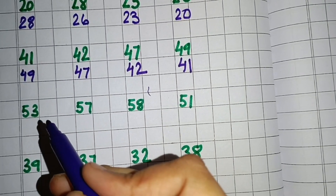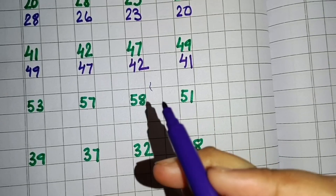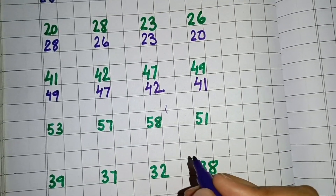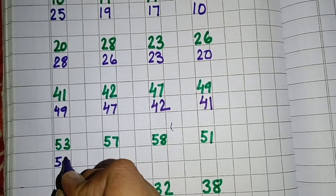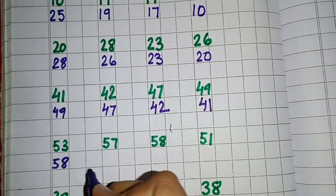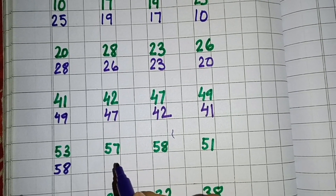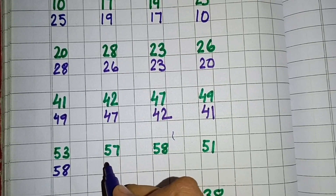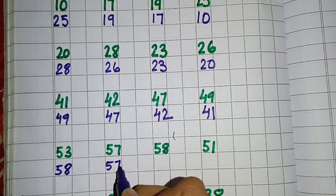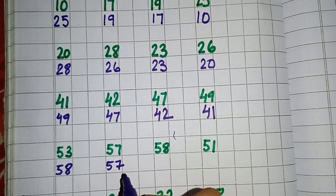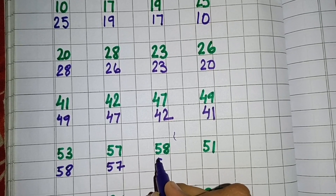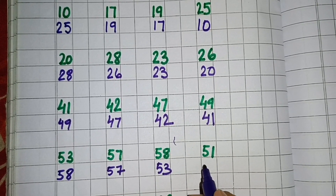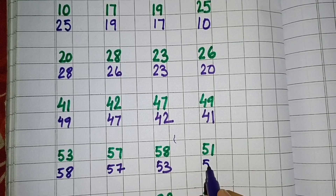Now next we have 53, 57, 58 and 51. So the biggest number here is 58, so we will write here 58. Then after that we will write here 57. Then we will write 53. After that at last we will write here 51.